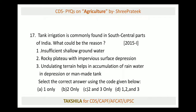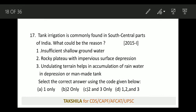Next again on tank irrigation: why is it mainly found in south central parts of India? Reasons: (1) insufficient shallow groundwater — true; (2) rocky plateau with impervious surface depressions — true; (3) undulating terrain helps in accumulation of rainwater in depressions or man-made tanks. Answer is 1 and 2; if that option is not available, go for 1, 2, and 3. Remember, tank irrigation also occurs in Himachal Pradesh — it basically means storing water and using it for agriculture, and South India uses it extensively.